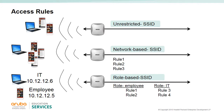An unrestricted SSID is the same as any-any-any permit — all devices associated with this SSID can pass traffic unrestricted by the firewall. Network-based SSIDs have rules that are imposed on all devices associated to a specific SSID. For example, if there is a rule that blocks pings, then all devices on the SSID would be denied ping traffic.